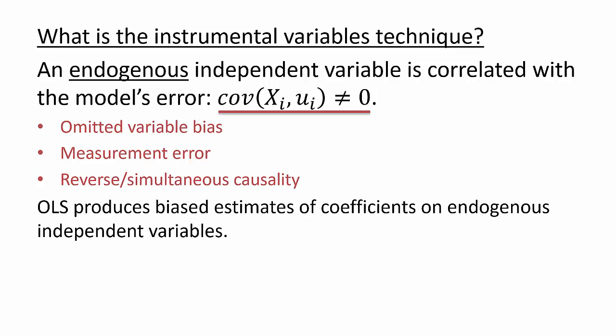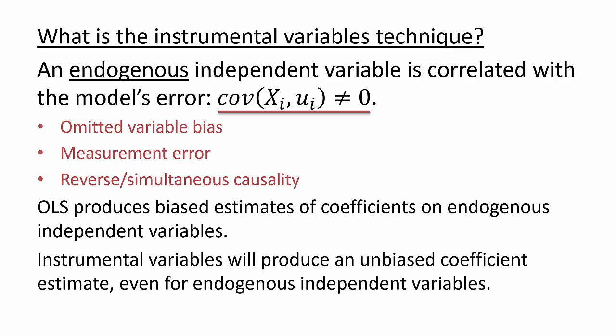One solution is to try to address the underlying problem such as adding omitted variables into the model or replacing an error-prone independent variable with an error-free measurement. However, it is often not feasible to find the data to fix these problems. We will see that if certain conditions hold, the instrumental variable's estimator will produce an unbiased estimate of coefficients even on endogenous independent variables.